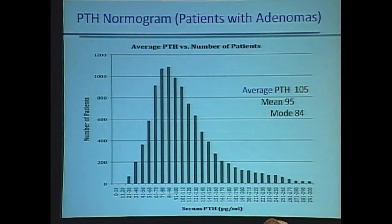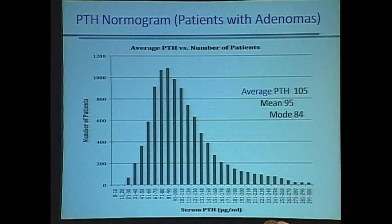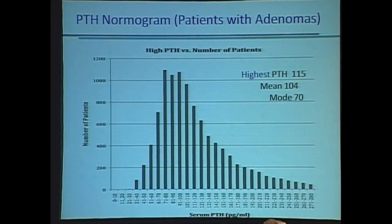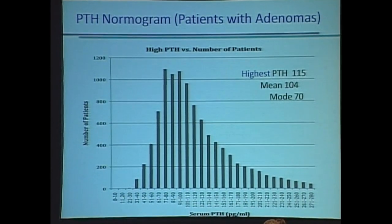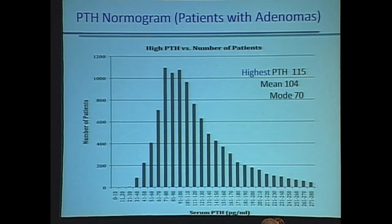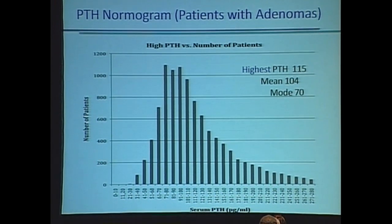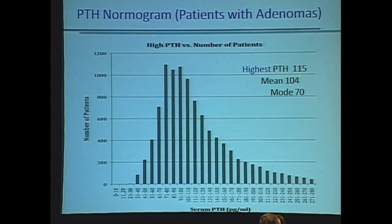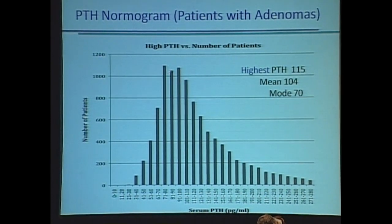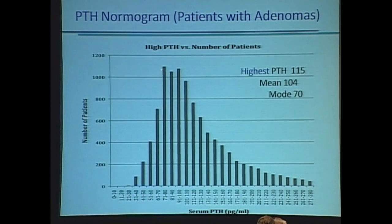This will become more clear as we develop more of these graphs. This is the highest PTH. Just like before, you don't always look at the average — you look at their highest parathyroid hormone level sometimes. The highest PTH level that we see, as an average of 10,000, is 115, mean 104, and a mode still way down in the 70s.